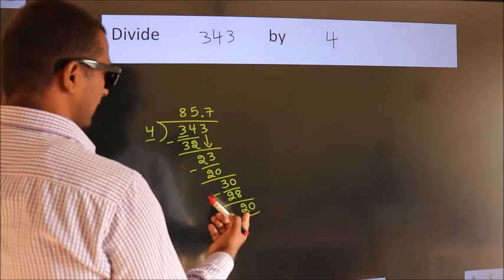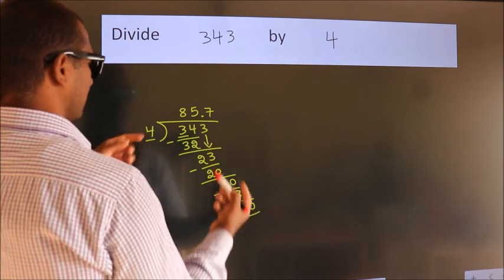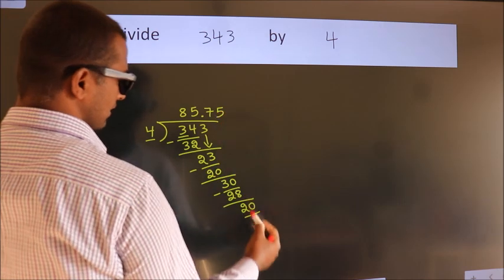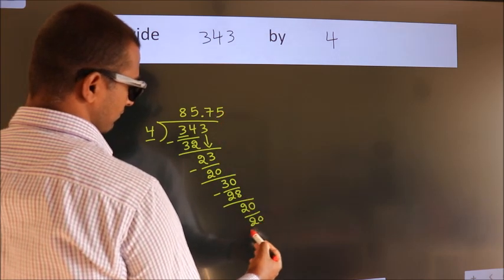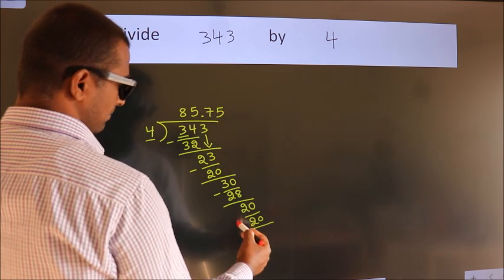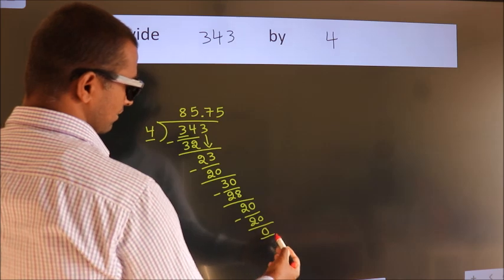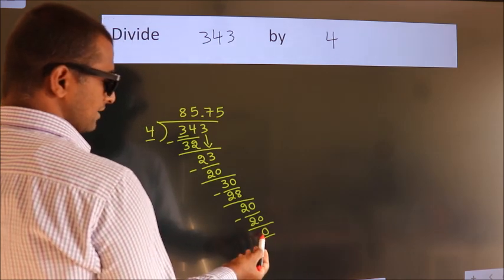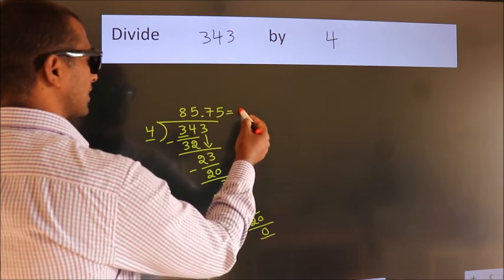When do we get 20? In 4 table, 4 times 5, 20. Now, we subtract. We get 0. We got remainder 0. So, this is our quotient.